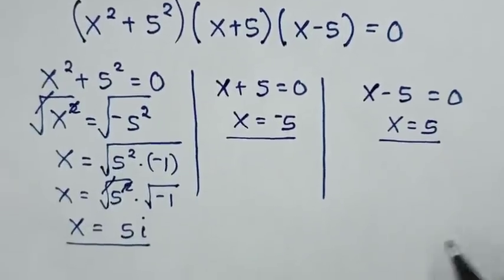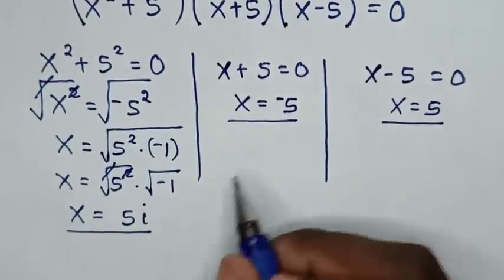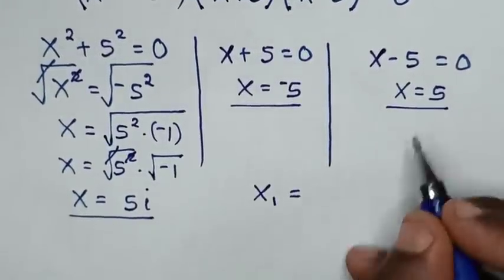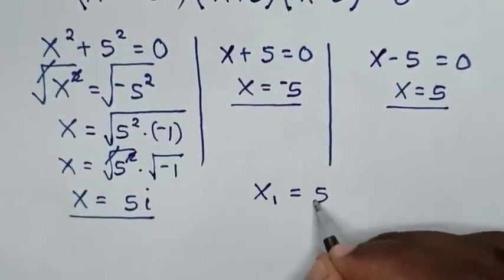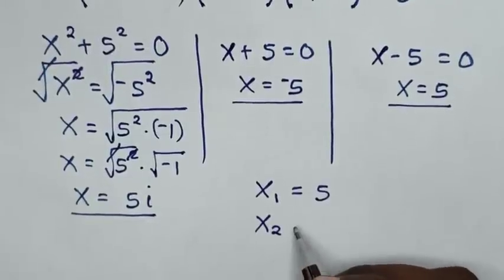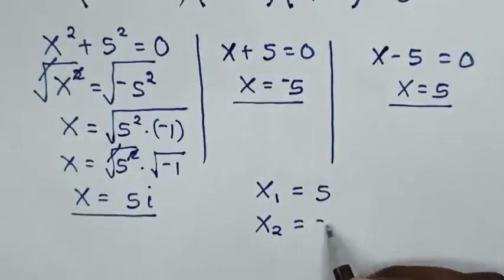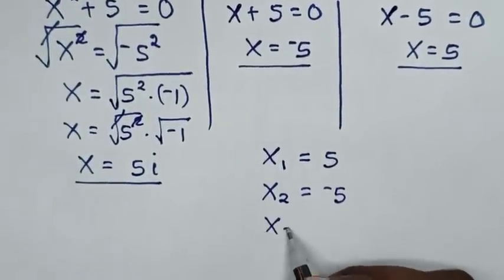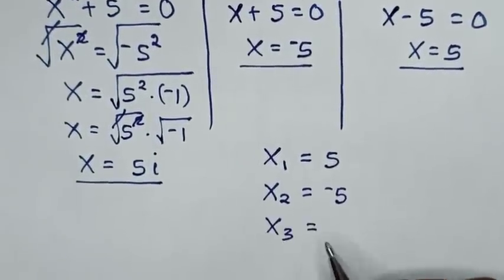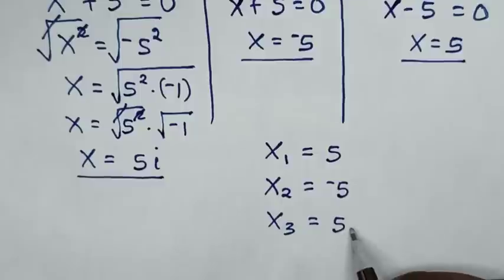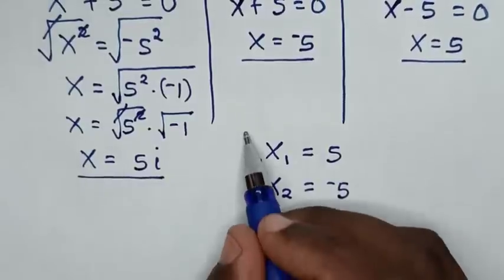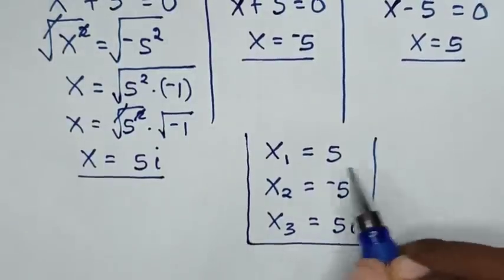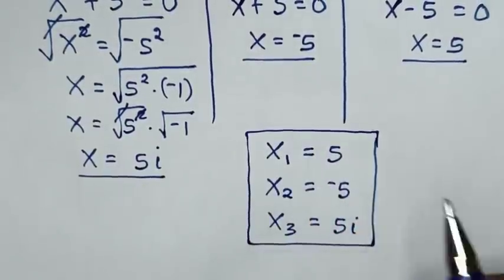Therefore, from our equation we have three values of x. The first value of x equals 5, the second value of x equals negative 5, and the third value of x equals 5i. This is the final answer for the values of x. Thank you for watching.